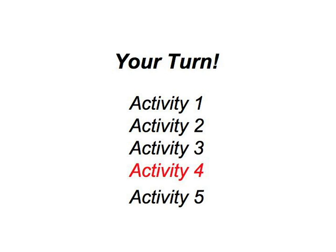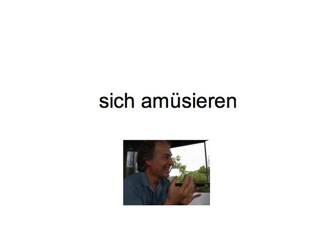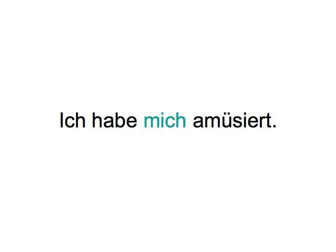Now we're getting into the emotions and how to express them reflexively in German. As we often talk about emotions as something that happened to us in the past, we'll give you the verb and you say that you had that emotional experience. All the verbs we're using are weak with a regular stem in the past participle, but note there's no 'ge-' in front of amüsiert, interessiert, verliebt, entschuldigt.